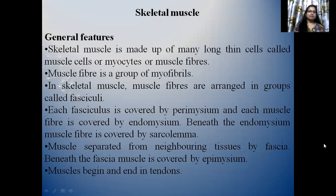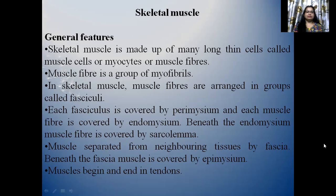First is skeletal muscles. General features: skeletal muscle is made up of many long, thin cells called muscle cells or myocytes or muscle fibres. Muscle fibre is a group of myofibres. In skeletal muscle, muscle fibres are arranged in groups called fasciculi. Each fasciculus is covered by perimyceum and each muscle fibre is covered by endomyceum. Beneath the endomyceum, muscle fibre is covered by sarcolemma. Muscle is separated from neighbouring tissues by fascia. Beneath the fascia, muscle is covered by epimyceum. Muscle begins and ends in tendon.